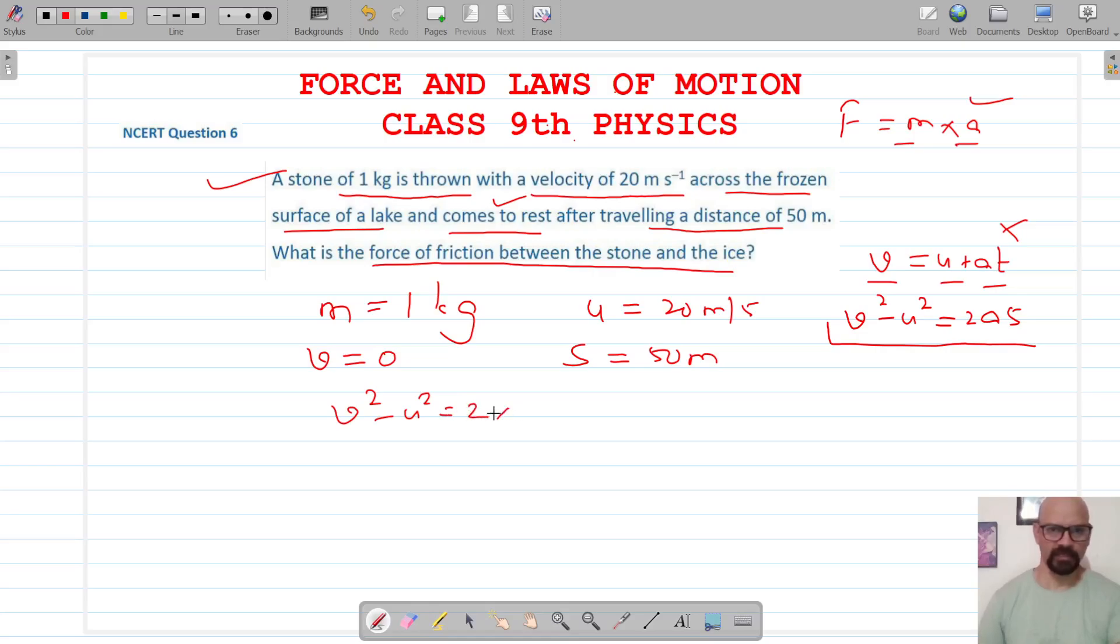This will work for us because v is known, u is known, and distance is also known. So v is 0, u is 20 meters per second, acceleration has to be calculated, and distance is 50.